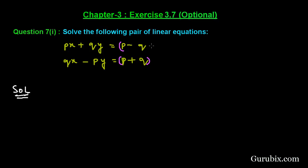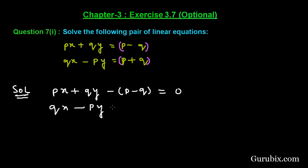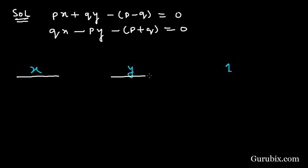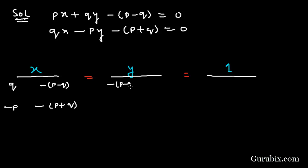First, we shall put the two constants p and q in brackets, and secondly we shall write these pair of equations in standard form. Then it will be minus p minus q — it is very important to place brackets here. We have qx minus py minus p plus q equals to 0. Here we have x, y, and 1. We shall draw these lines and now write b1, b2, c1, c2. Under x: b1 is plus q, b2 is minus p, c1 is minus p minus q, and c2 is p plus q.